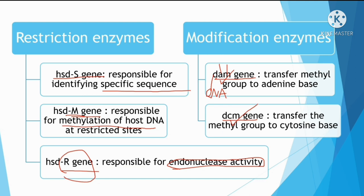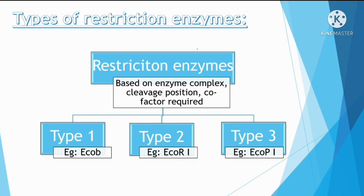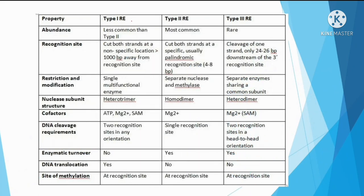Next, the types of restriction endonucleases. Based on enzyme complex, cleavage position, and cofactor required, restriction enzymes are classified into three types: Type I, Type II, and Type III. We can study these through a comparative table.